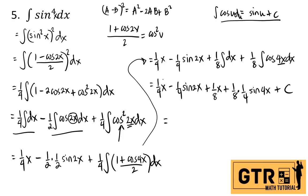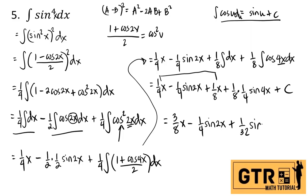Simplify by combining (1/4)x and (1/8)x: change (1/4) to (2/8), so (2/8 + 1/8) = (3/8)x. We also have minus (1/4)sin(2x), and (1/8)·(1/4) = (1/32)sin(4x) plus C. So the final answer is (3/8)x minus (1/4)sin(2x) plus (1/32)sin(4x) plus C. Next is number 6.